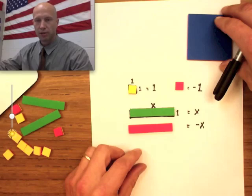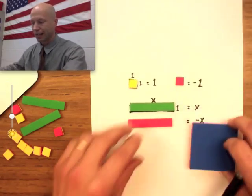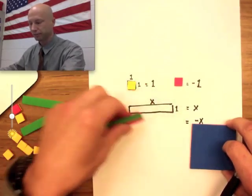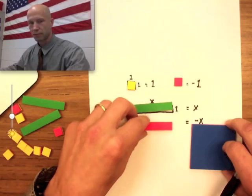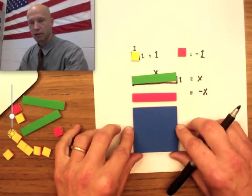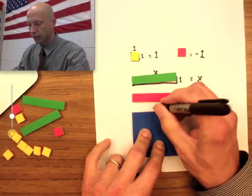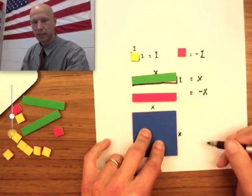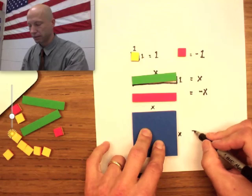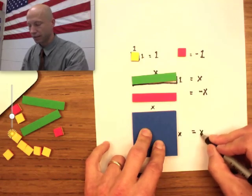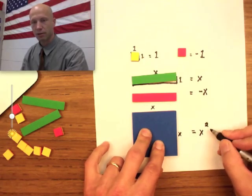Now, we have another piece here that we won't use at all in seventh grade math. But if you'll notice, this square is X units long on one side, and X units long on the other side. And X times X is X to the second power, or X squared.